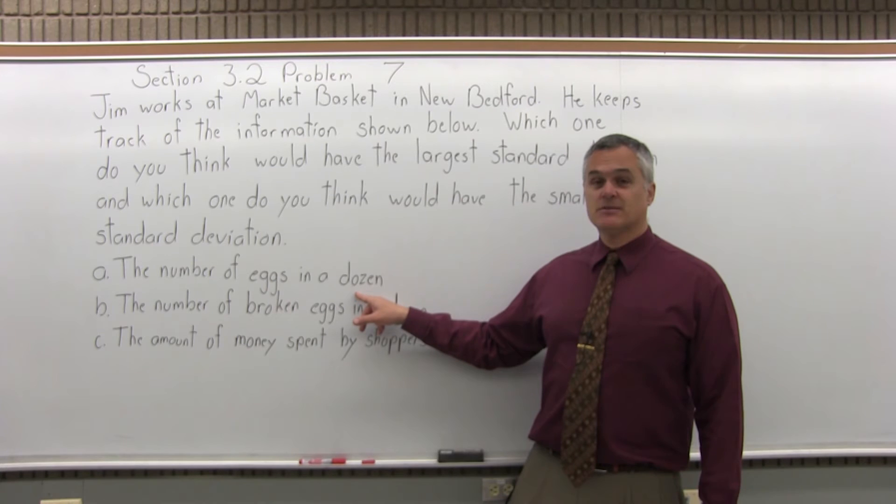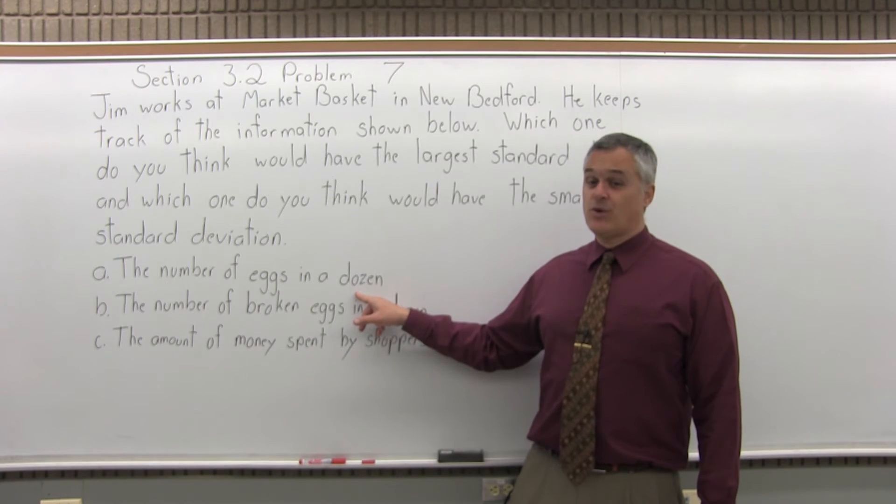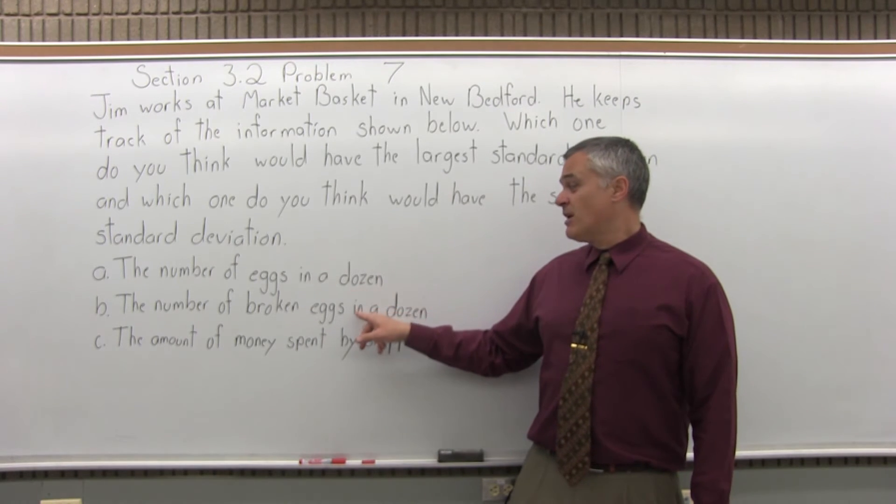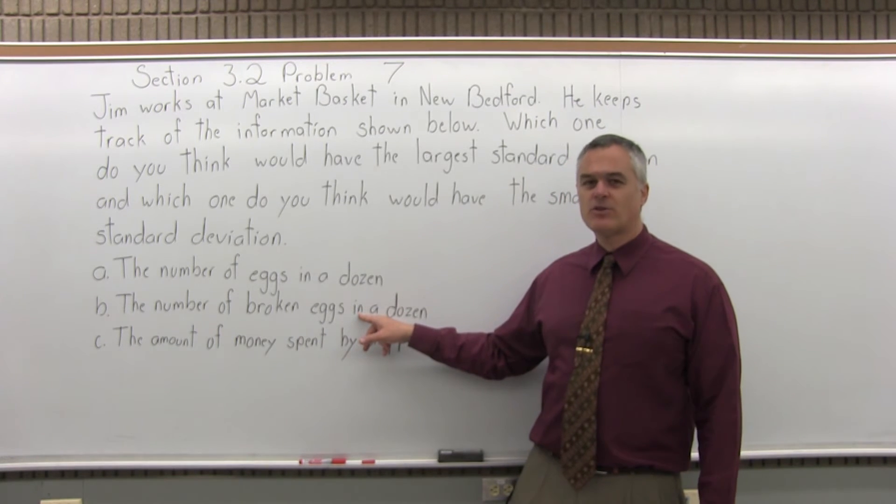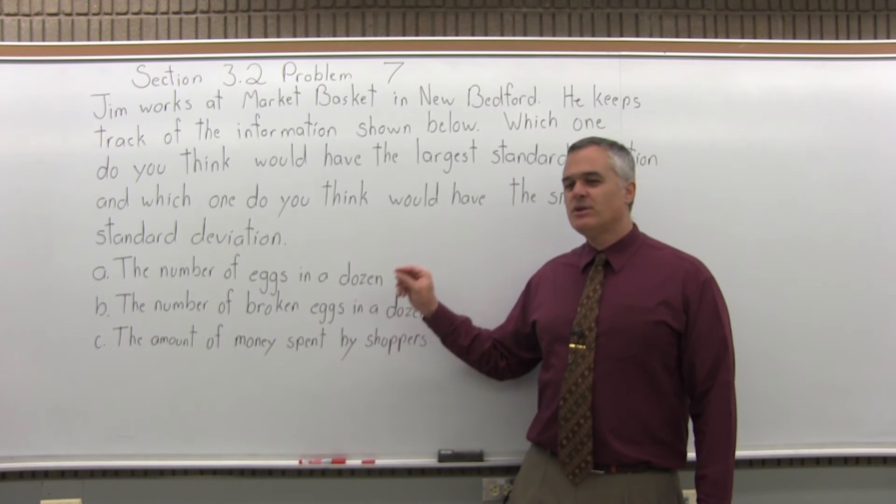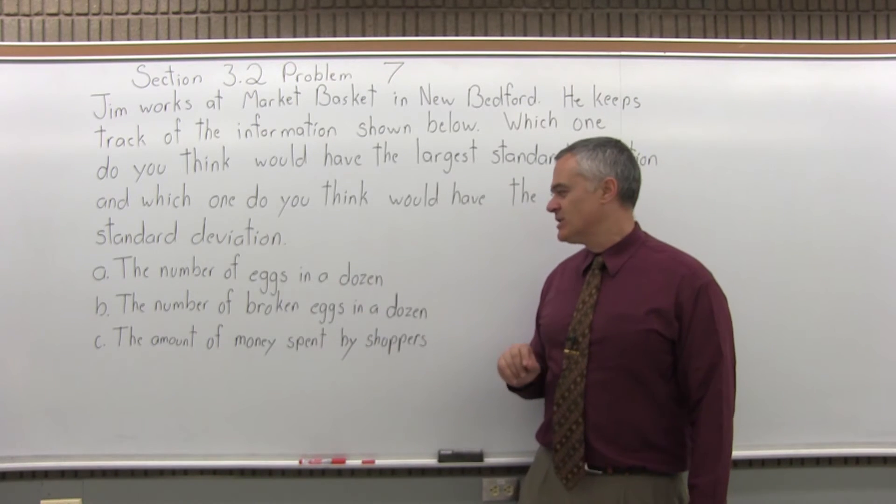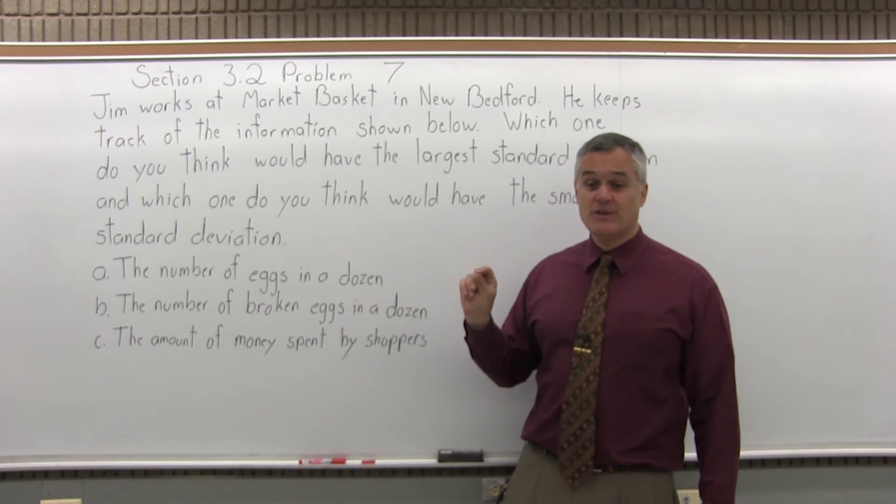The number of eggs in a dozen, it's the same for every dozen, it's 12. So the standard deviation would be zero. There's no spread in the data at all. The number of broken eggs in a dozen, it's usually zero, but every now and then you have one or two broken eggs. So you'd have a tiny standard deviation. The first one should be a standard deviation of zero.